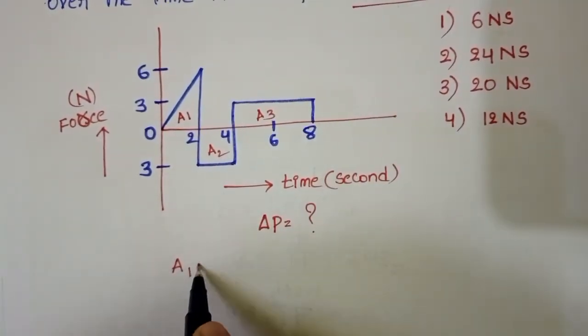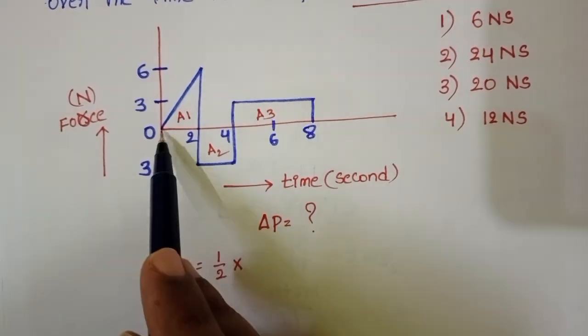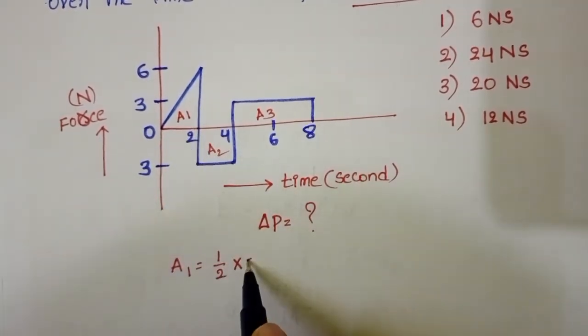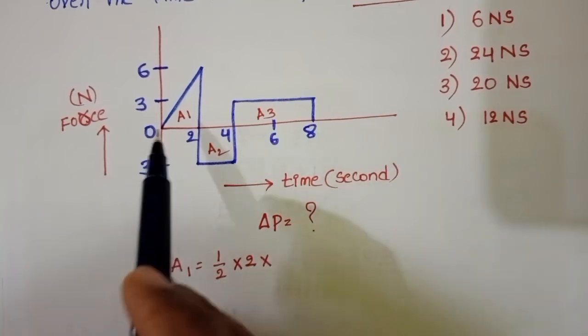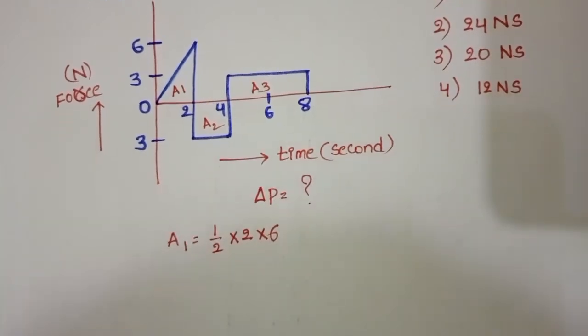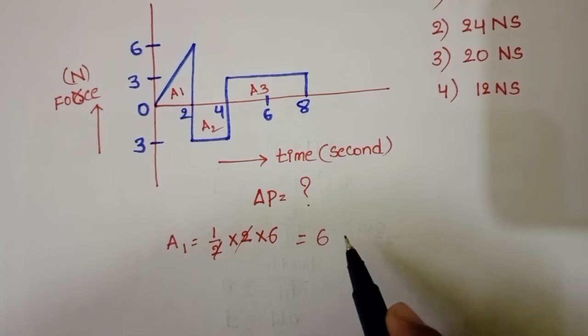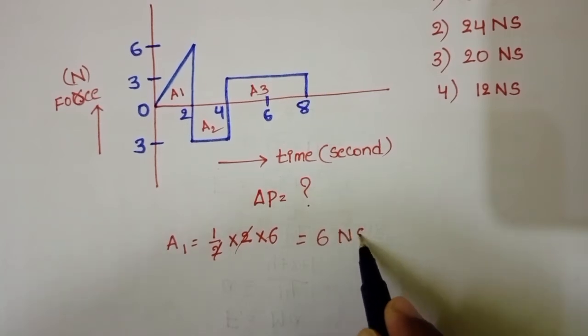A1 equals the area of triangle, half into time equals 2 seconds, and force is 0 to 6 Newton. So 2 into 6, 2 gets cancelled. A1 equals 6 Newton seconds.